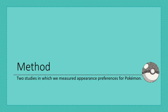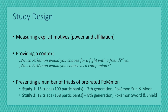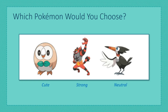We conducted two studies to test our theoretical assumptions. In both studies, we measured explicit motives and had two conditions: participants were either told to choose a Pokémon for a fight or as their companion. We then presented a number of triads featuring three Pokémon each, and participants always had to choose which Pokémon they would select. All Pokémon were pre-rated as either strong-looking, cute, or neither. This is an example triad from the study, and here you can see how each Pokémon's appearance had been pre-rated.